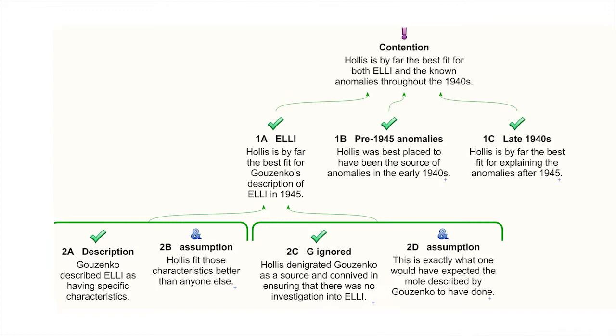Note that there are two supporting arguments here. The first is that Guzenko described in some detail the profile of Elli, and Hollis fits that profile — in important respects he uniquely fits that profile. This should not be lightly dismissed; the underpinnings suggest this is a very strong clue. What was the description? Guzenko says: first, Elli is male; second, he has direct access to MI5's files on matters to do with Russia, Soviet espionage, and communists of interest in Britain. That happens to have been true of Hollis from virtually the start of his career in MI5, and certainly through the Second World War and the late 1940s.